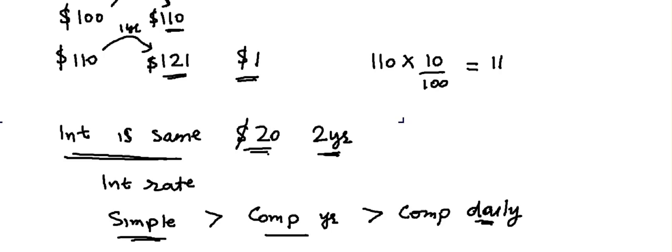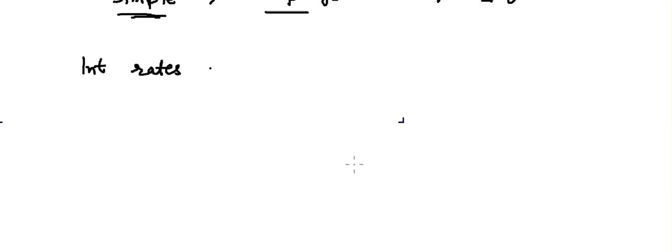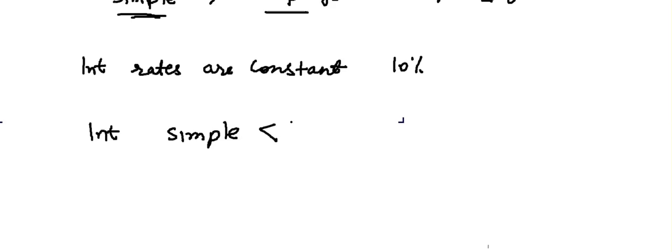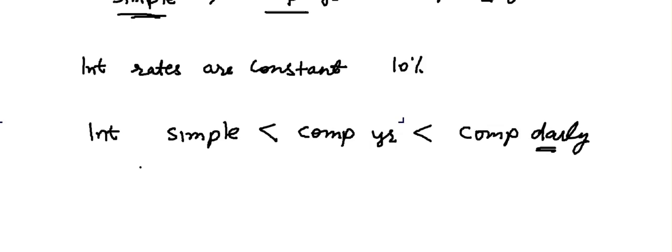Conversely, if the interest rate is constant at, say, 10%, simple interest will earn you the least, compounding yearly will earn more, and compounding daily will earn the most. So simple interest gives you less interest compared to compound interest, which is more logical. I hope this video helped — see you in the next one!